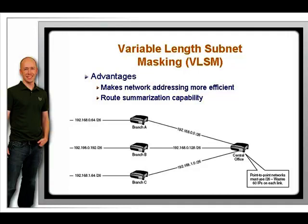Only classless routing protocols — EIGRP, OSPF, RIP version 2, and BGP — include the subnet mask for the networks they advertise in their routing updates, and thus publish a level of detail that makes VLSM possible.